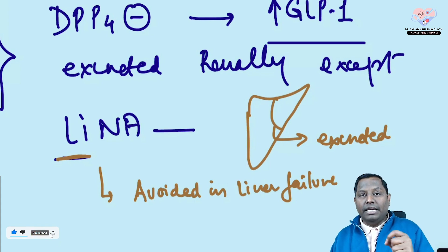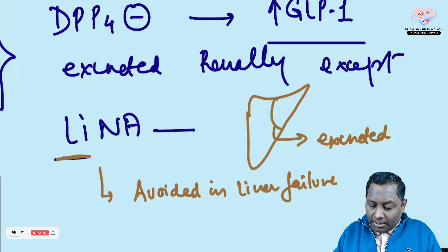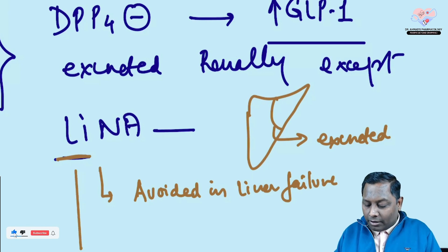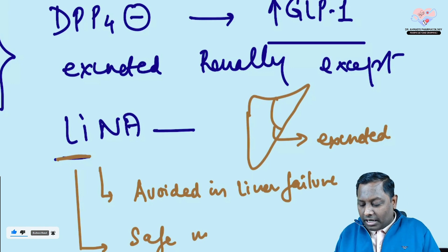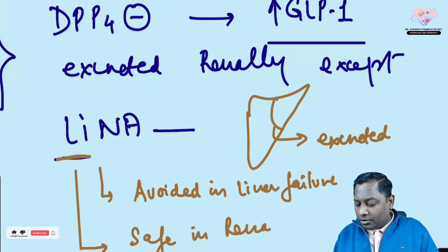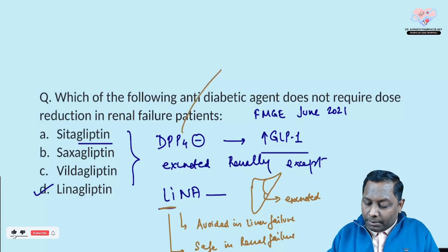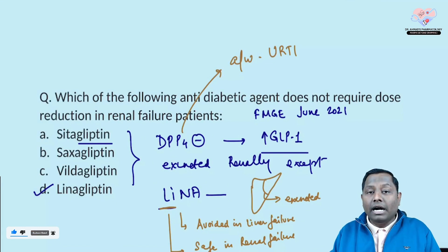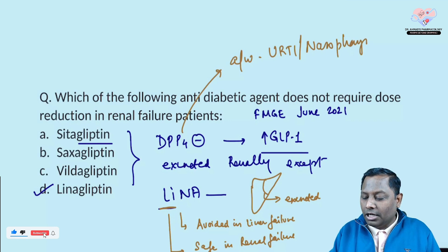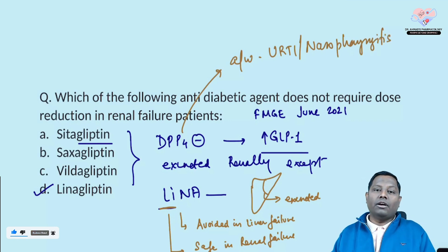Because linagliptin is excreted mainly by the hepatic route, it is considered a safer alternative in a patient with renal failure. Also remember: all DPP-4 inhibitors are associated with a common side effect — URTI (upper respiratory tract infection), sometimes termed nasopharyngitis. The examiner can use either term.